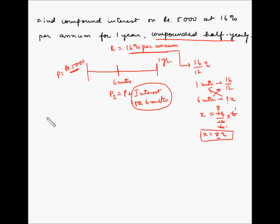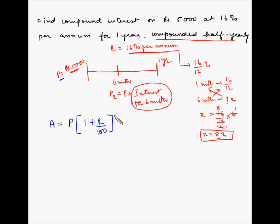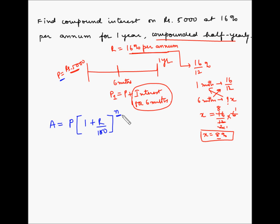Let us solve this using the formula for compound interest. The formula is A (the amount) equals P multiplied by (1 + R/100) to the power of N, where A is the principal plus the interest accrued over the period. N here is the number of time periods for which the interest is being compounded. Here, the interest is compounded once after the six-month period and then again at the end of one year, so N is 2 in this case.